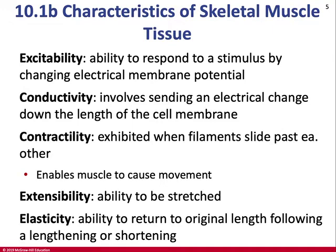What happens is that protein complexes inside the muscle cell shorten. Those complexes are connected to proteins that are part of the muscle cell membrane, which is connected to connective tissue, ultimately connected to the bone, and that produces the movement of the bone. Extensibility is the muscle's ability to be stretched, and elasticity is its ability to return to its resting length.